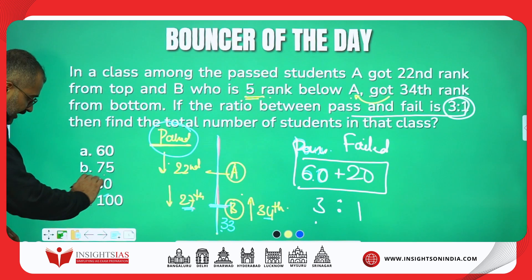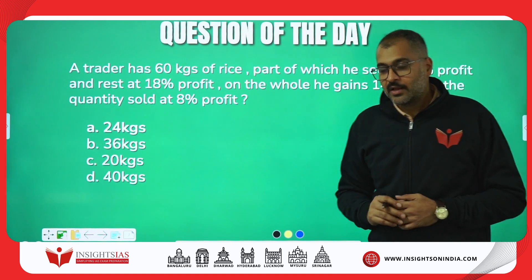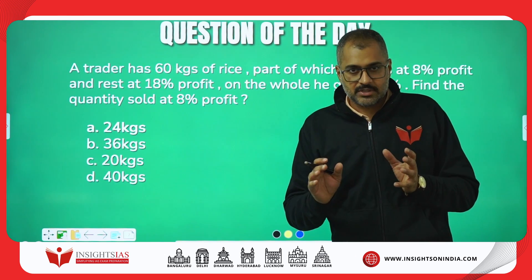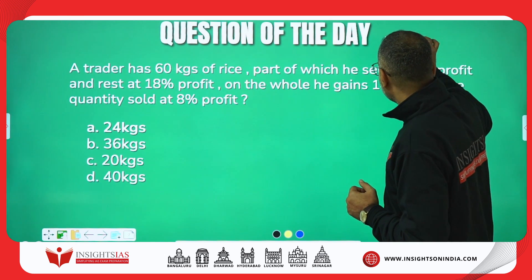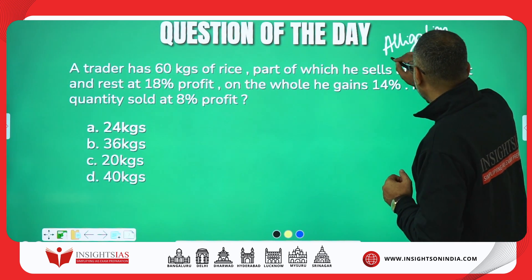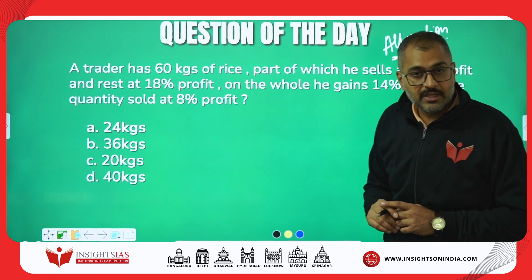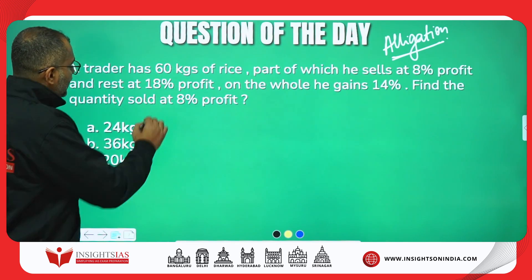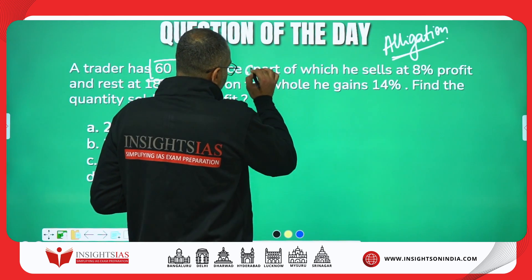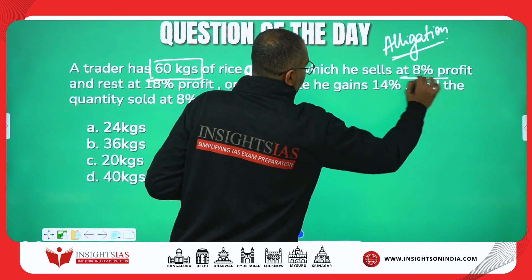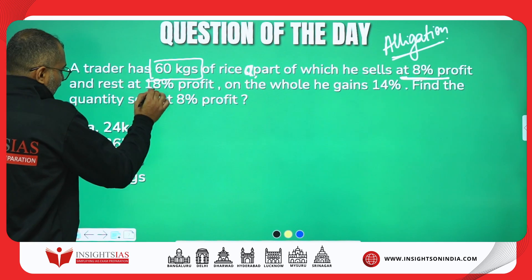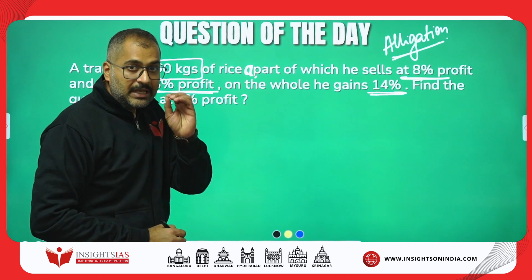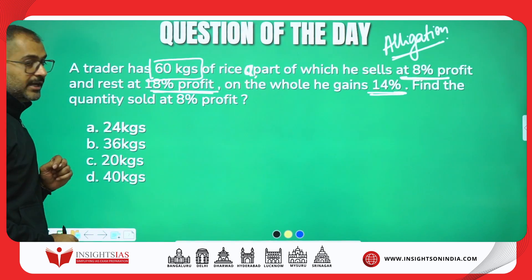Now this is the Question of the Day. This is a profit and loss topic, but I will explain the technique of solving this question which is called allegation. Using allegation, many questions in mixtures can be solved. A trader has 60 kg of rice, a part of which he sells at 8% profit and the remaining at 18% profit, but the overall gain he makes is 14%. Find the quantity sold at 8% profit.